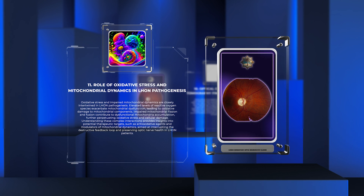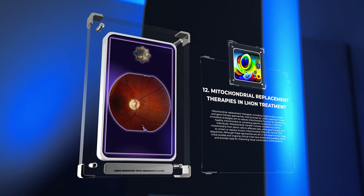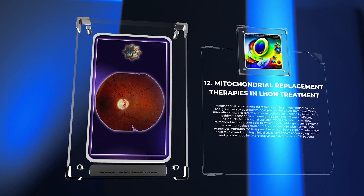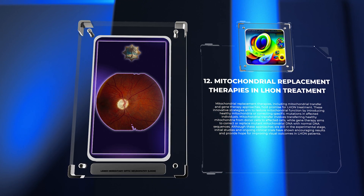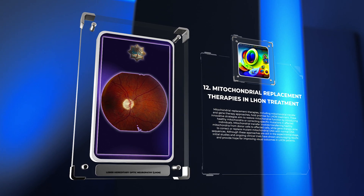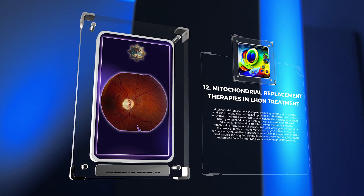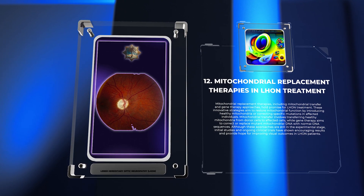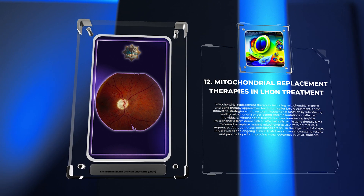Mitochondrial replacement therapies, including mitochondrial transfer and gene therapy approaches, hold promise for LHON treatment. These strategies aim to restore mitochondrial function by introducing healthy mitochondria or correcting specific mutations. Mitochondrial transfer involves transferring healthy mitochondria from donor cells to affected cells, while gene therapy aims to correct or replace mutant mitochondrial DNA. Although still experimental, initial studies and ongoing clinical trials have shown encouraging results.